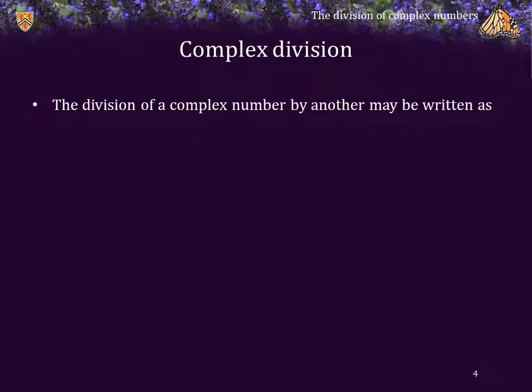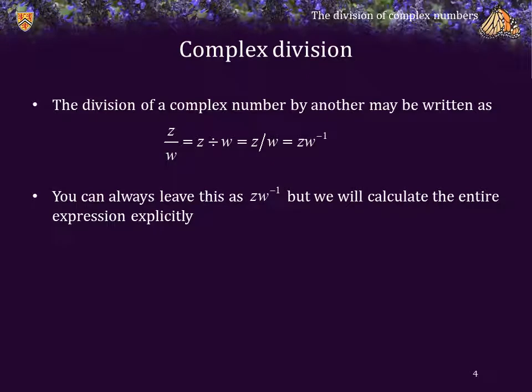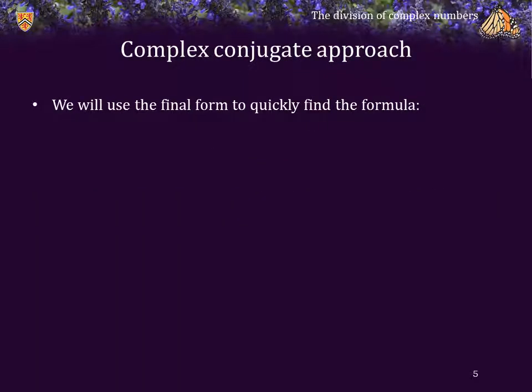The division of one complex number by another may be written as z over w, z divided by w, or z times w-inverse. You can leave this as z times w-inverse, explicitly calculate the reciprocal of w, and then multiply that result by z, but we are going to calculate the entire expression explicitly. Using the final form: z times w-inverse is z times w-star over the magnitude of w squared, which is just the product of z times w-star over the magnitude of w squared.